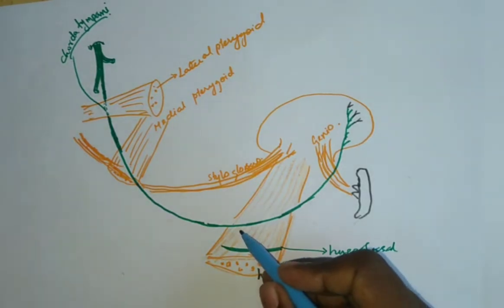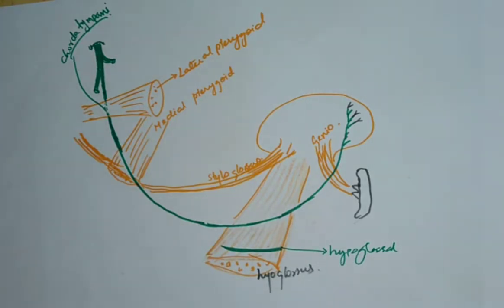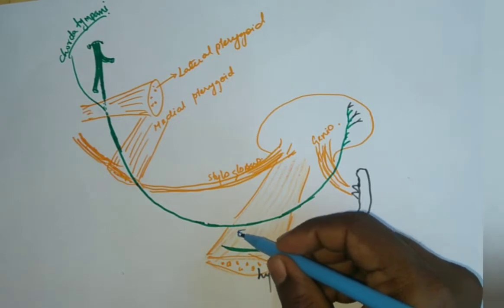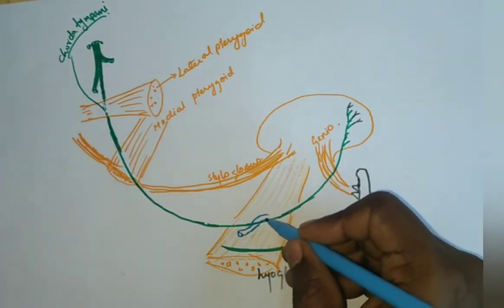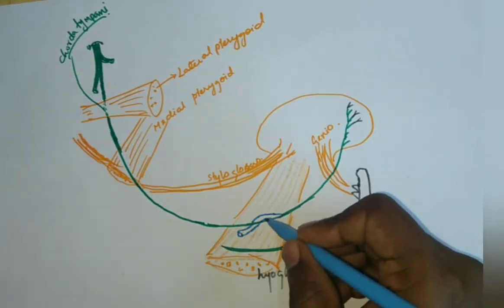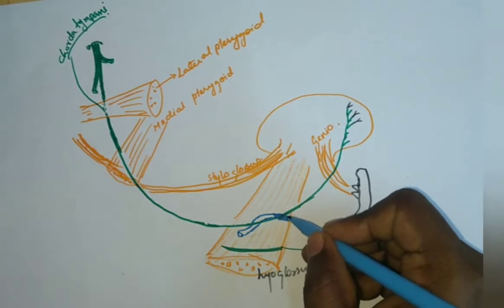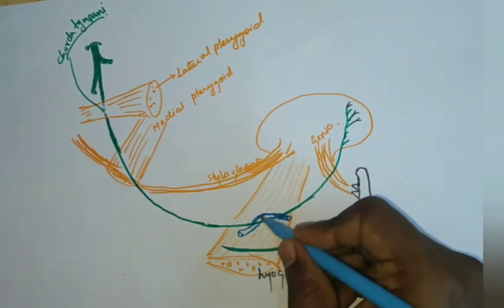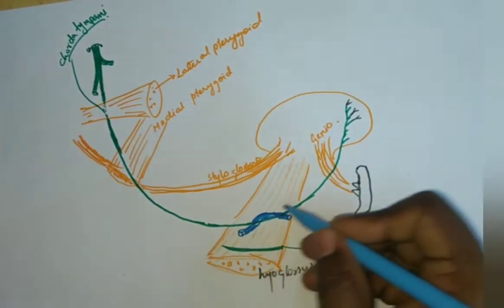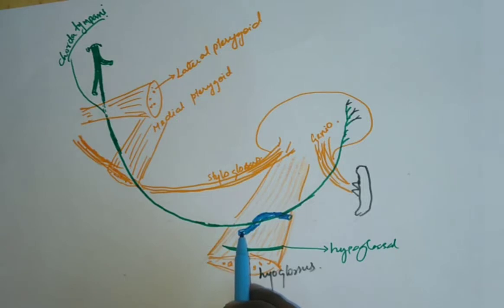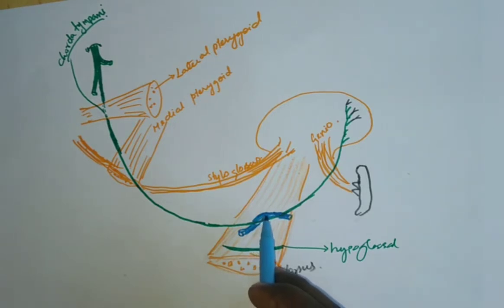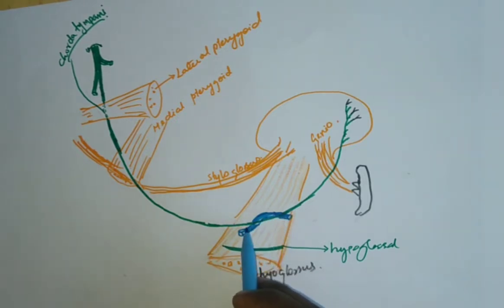Between the hypoglossal nerve and the lingual nerve, the duct of the submandibular gland will be related. Initially the duct is located inferiorly, and the nerve crosses the duct, looping over it. Continuing forward, the nerve crosses superficial to the duct and then hooks around it to reach its medial side.